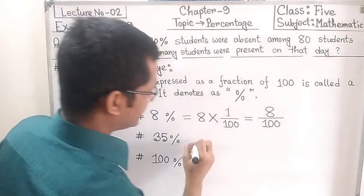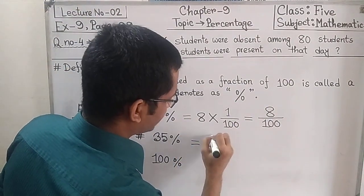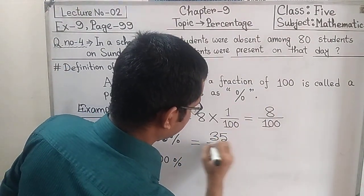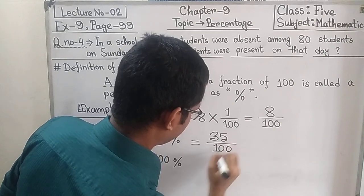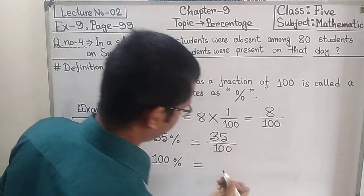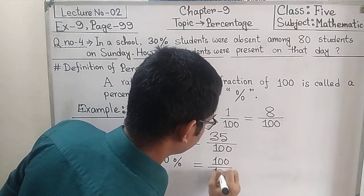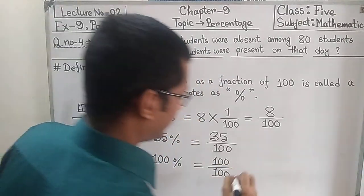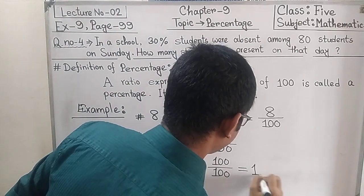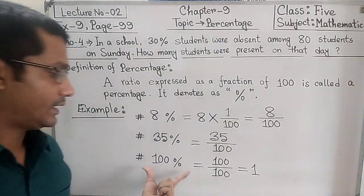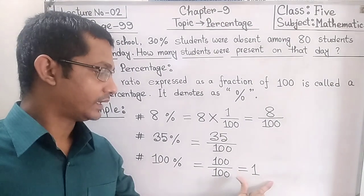Similarly we can write directly 35 percent means 35 by 100. Similarly 100 percent means 100 by 100. But 100 by 100 that makes 1. So 100 percent means 1.